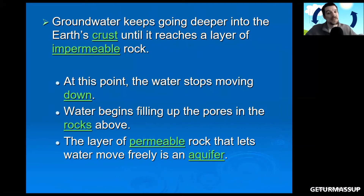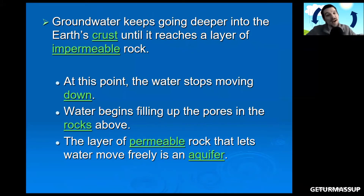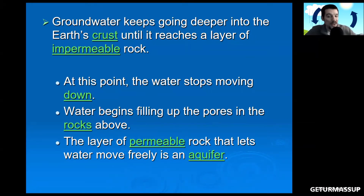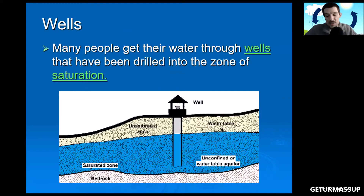Let's write this down: groundwater keeps going deeper into the earth's crust until it reaches a layer of impermeable rock — water cannot go through. At that point, water stops moving down and begins filling up the pores in the rocks above. The layer of permeable rock that lets water move freely is known as an aquifer — write that word down.